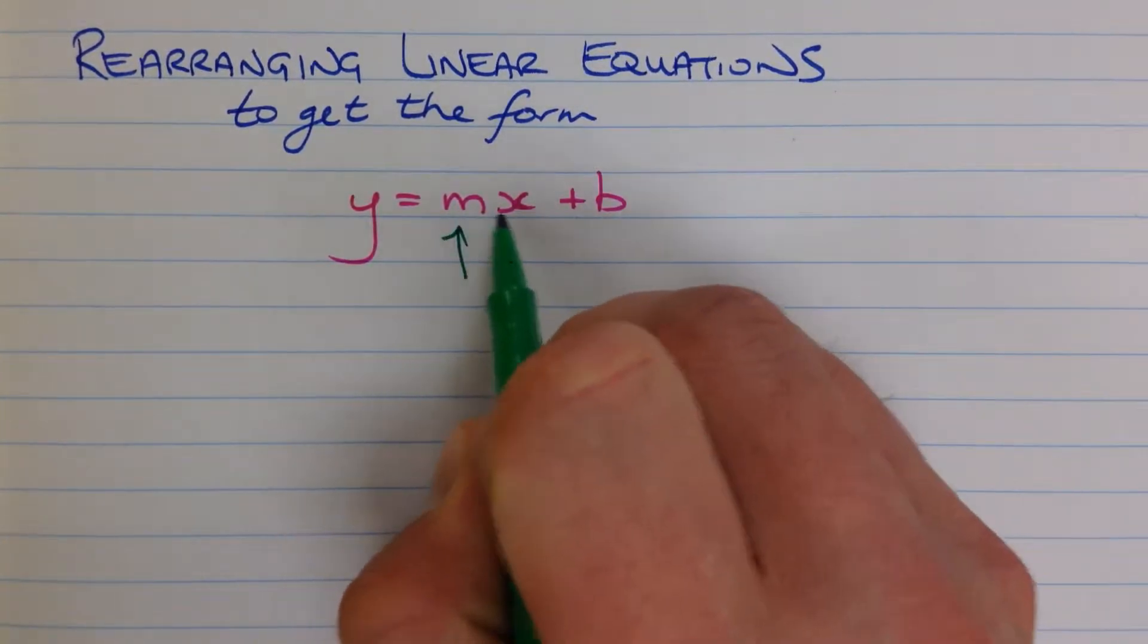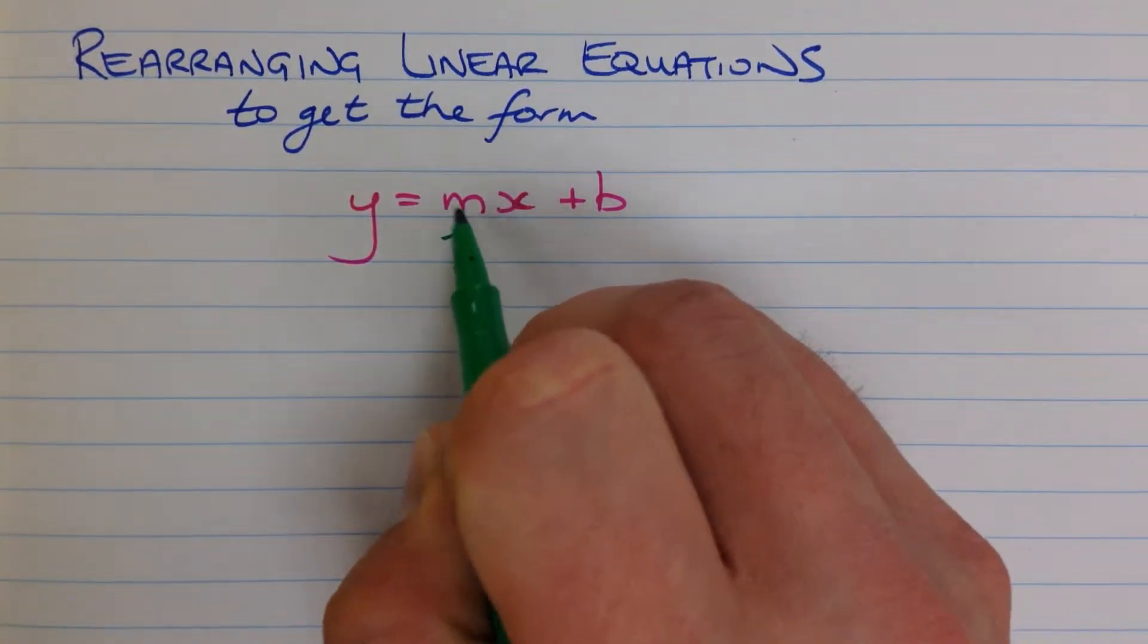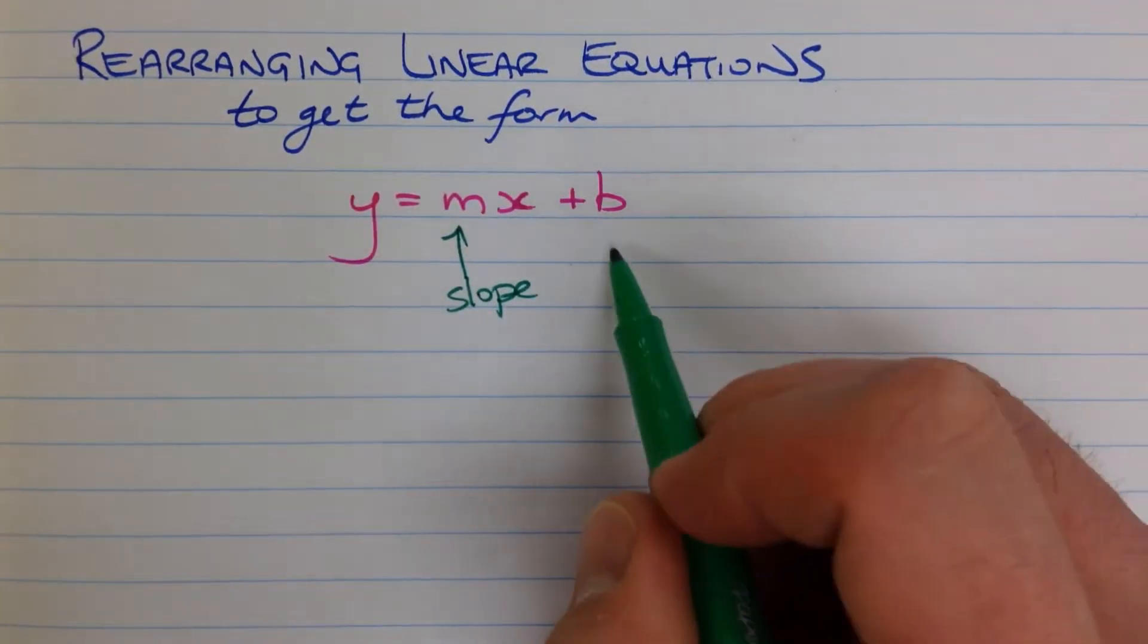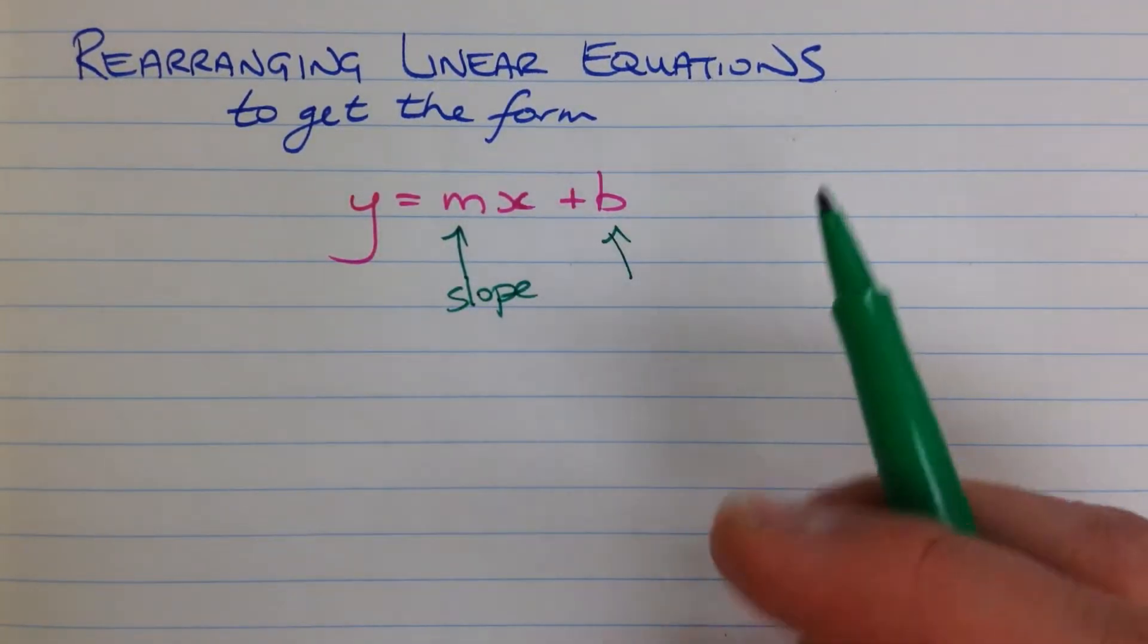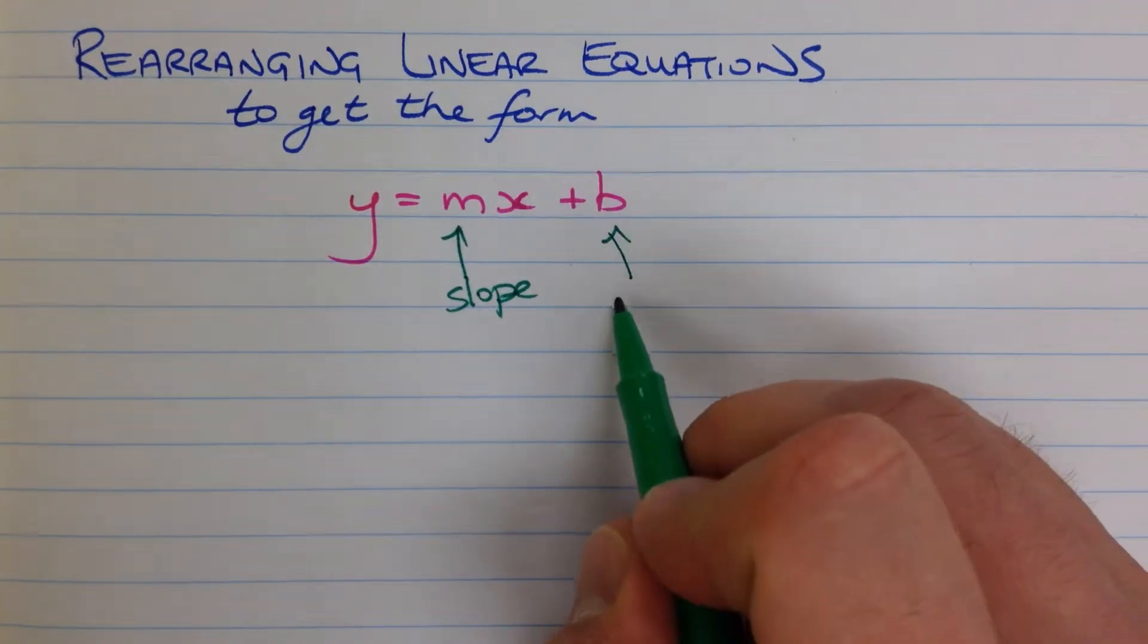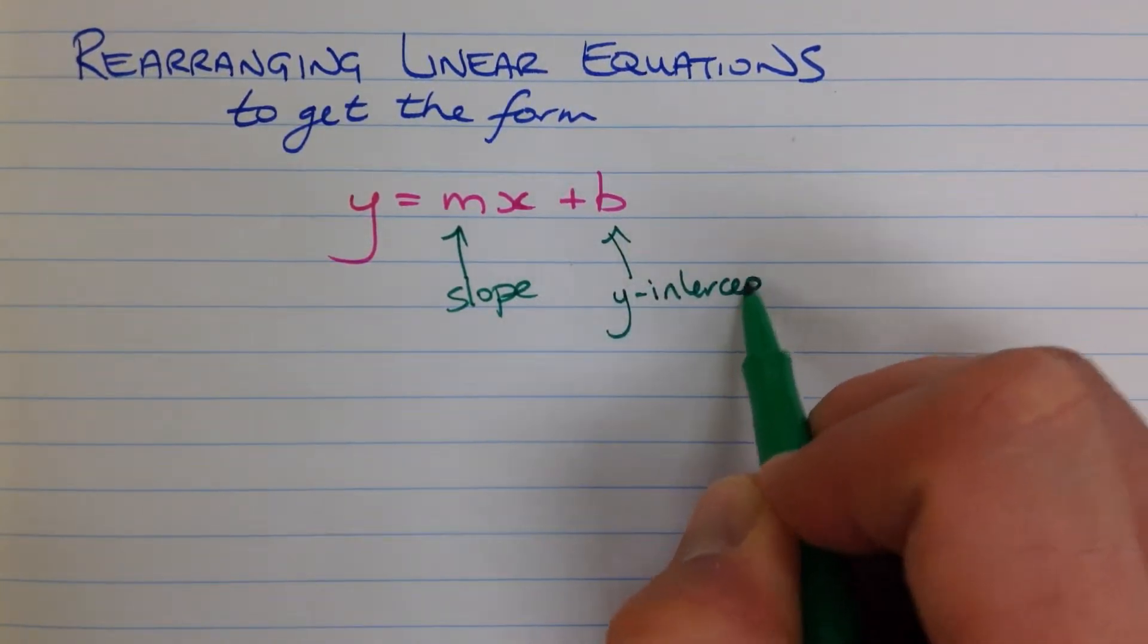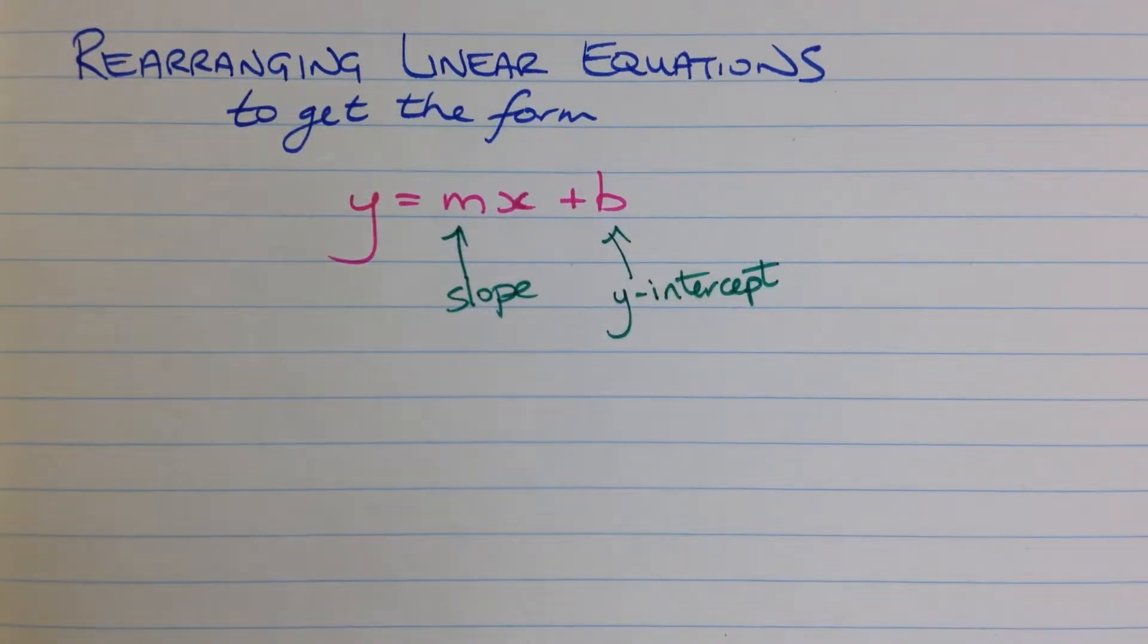Whenever it's written like this, with an x term with a coefficient in front, that coefficient is the slope. And this constant value, whatever this number is at the end here, that is the y-intercept, the place where that line crosses the y-axis.